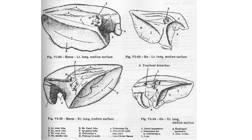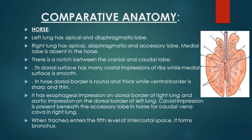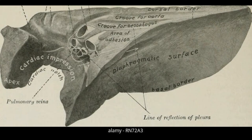The dorsal surface of the horse lung has many costal impressions of ribs while its medial surface is smooth. The dorsal border is round and thick while the ventral border is sharp and thin. In horse, there are two impressions present on the dorsal border of both lungs: these are known as the esophageal and aortic impressions.